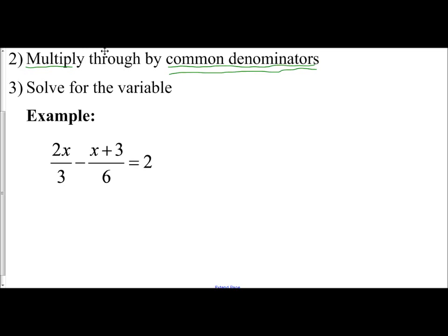First thing I'm going to do is I'm going to find my excluded values. And what I do is I set the denominator equal to 0 for all of the fractions and solve for the variable. Well, there is no variable in the denominator here, so there's nothing to solve for. There's no variable in the denominator here, so nothing to solve for there. So there is no excluded values.